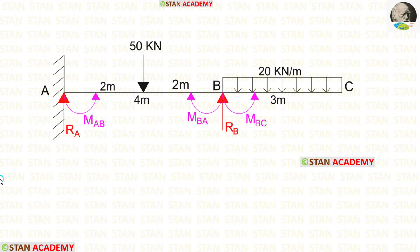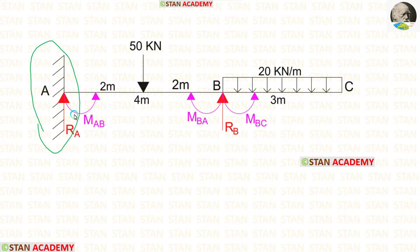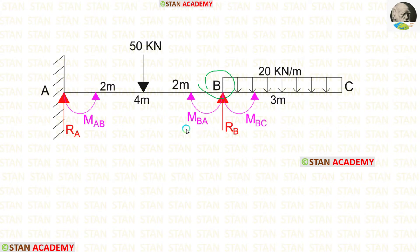In this analysis, we have to find three moments. At point A, there is a fixed support, so there will be a moment MAB. At joint B, there are two moments: MBA and MBC. So totally, we have to find three moments. We also have to find two vertical reactions, RA and RB.